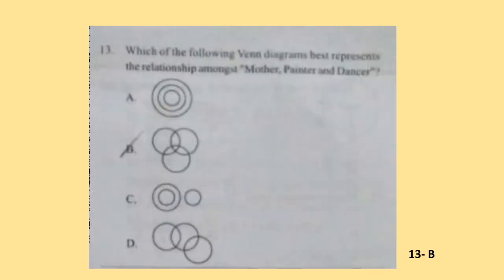Question 13: Which of the following Venn diagrams best represents the relationship amongst Mother, Painter and Dancer? Every mother can't be a Painter and Dancer. Every Painter is not necessarily a Mother and Dancer. And a Dancer is not necessarily a Mother and Painter. So option B can best represent this. Option B is the correct answer.